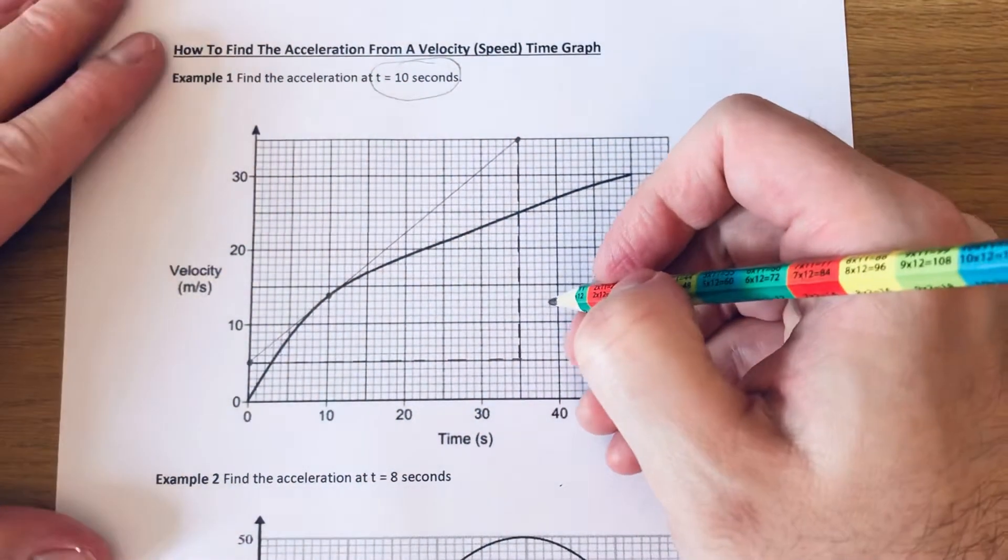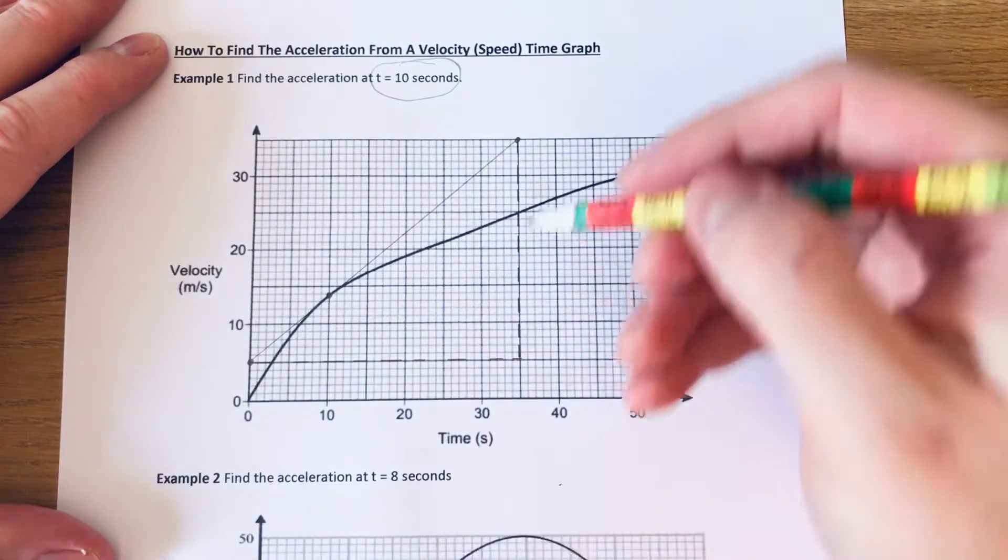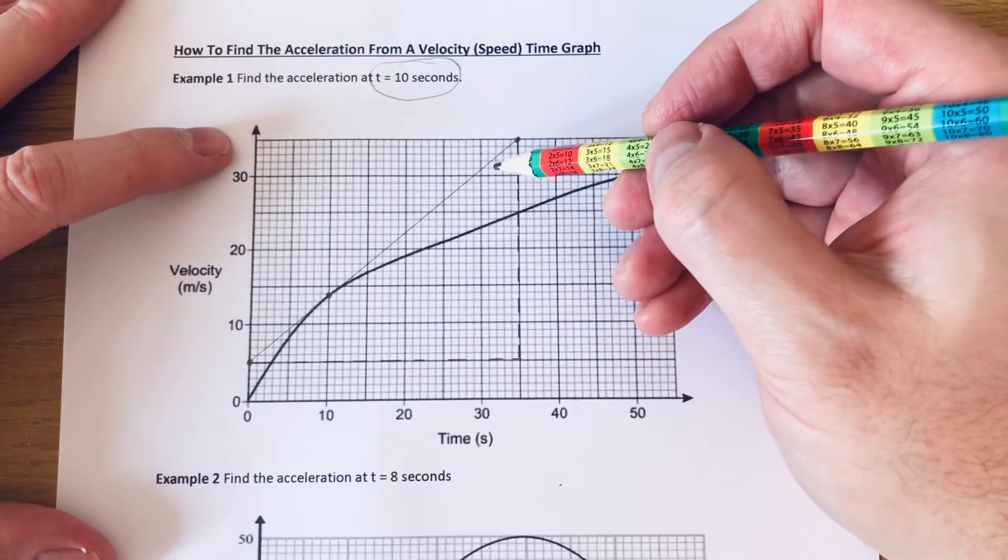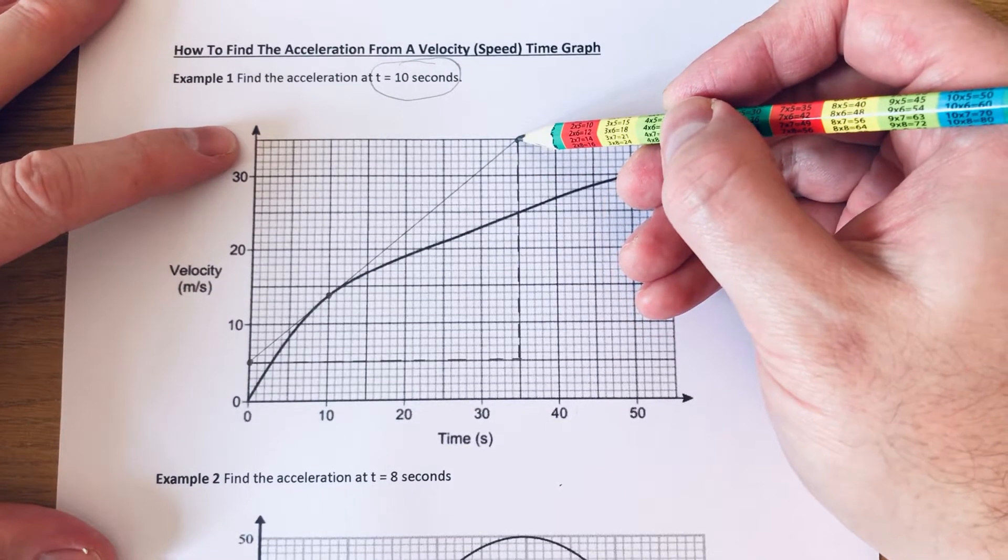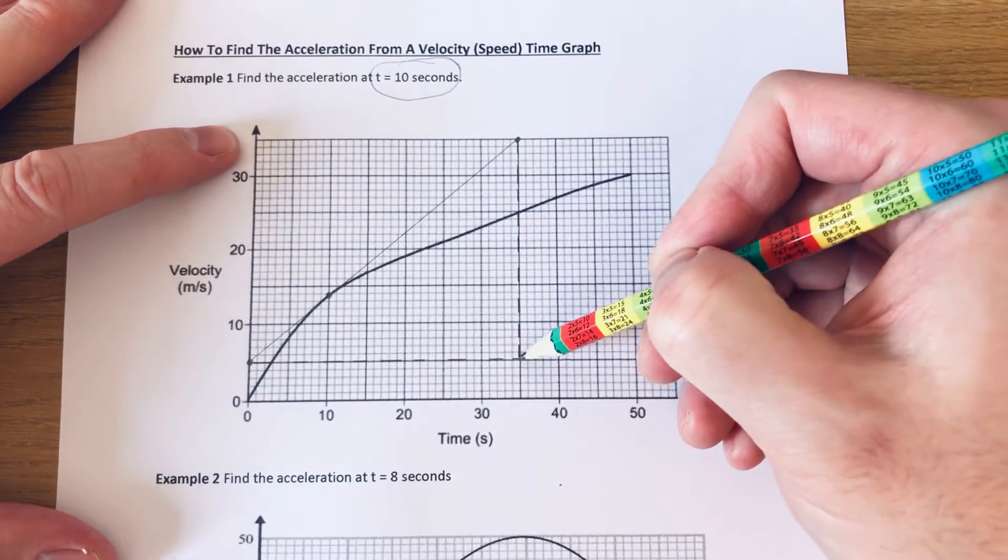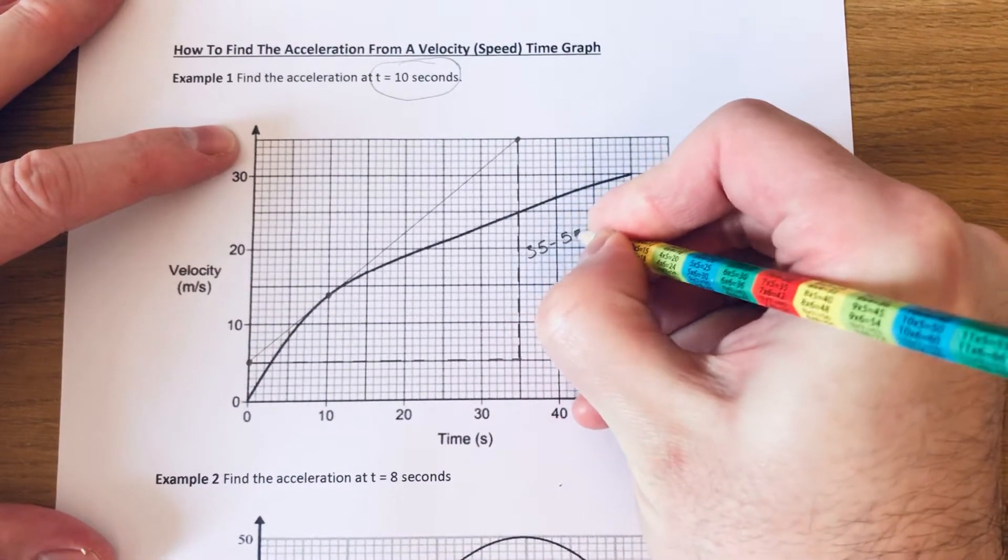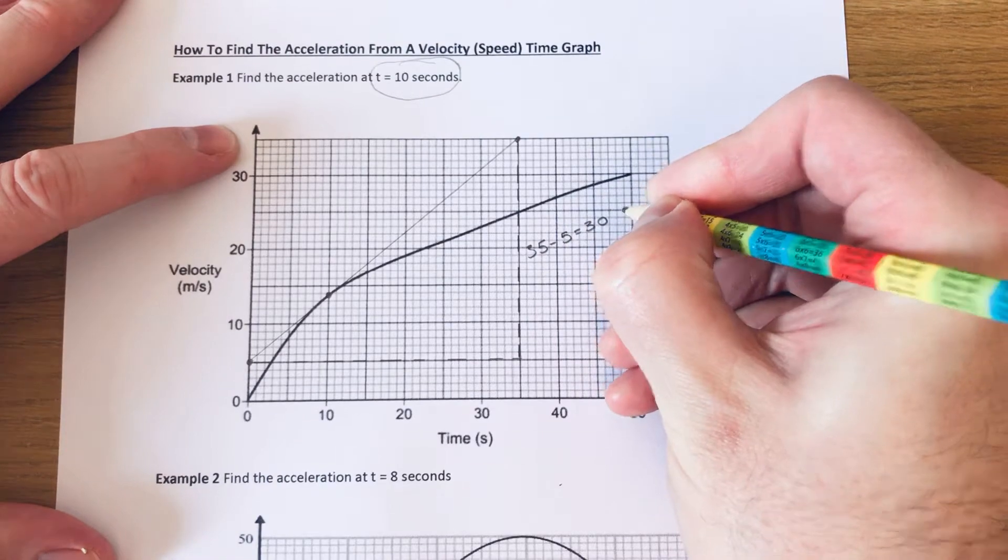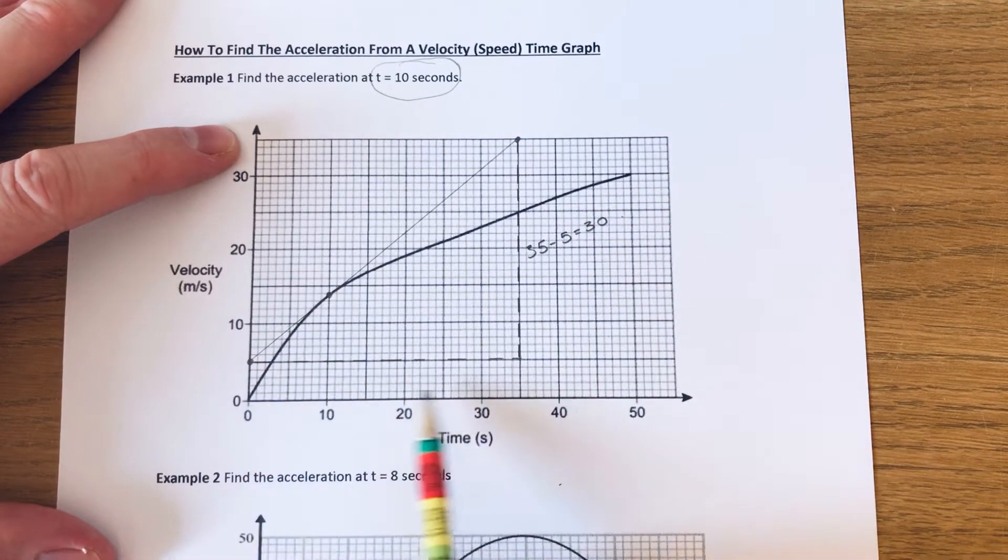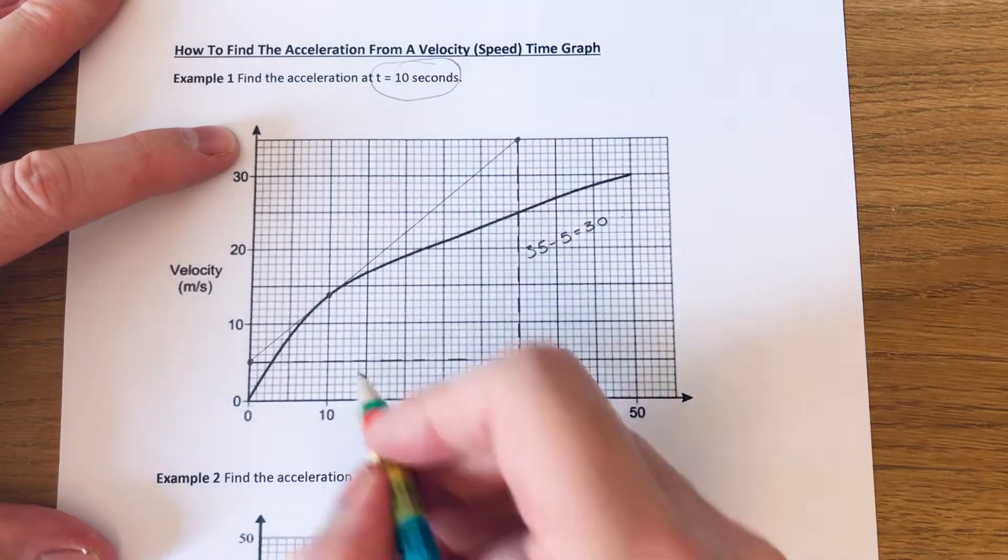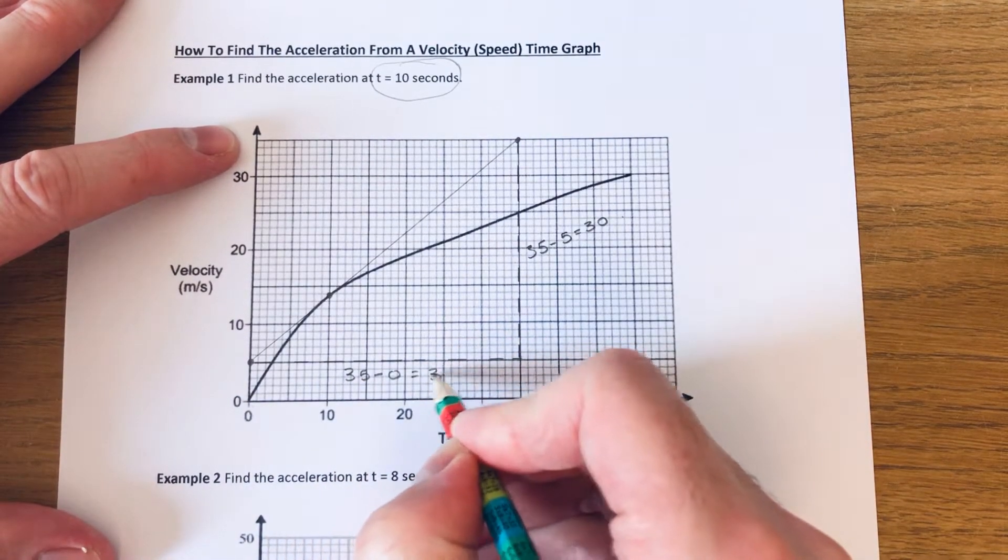And to get the gradient you do the height of the triangle and divide it by the base of the triangle. So the height of the triangle goes from, it's 35 at the top and it's 5 there. So the height will be 35 take away 5 which is 30. And the base of our triangle goes from 0 up to 35. So that's 35 take away 0 which is 35.